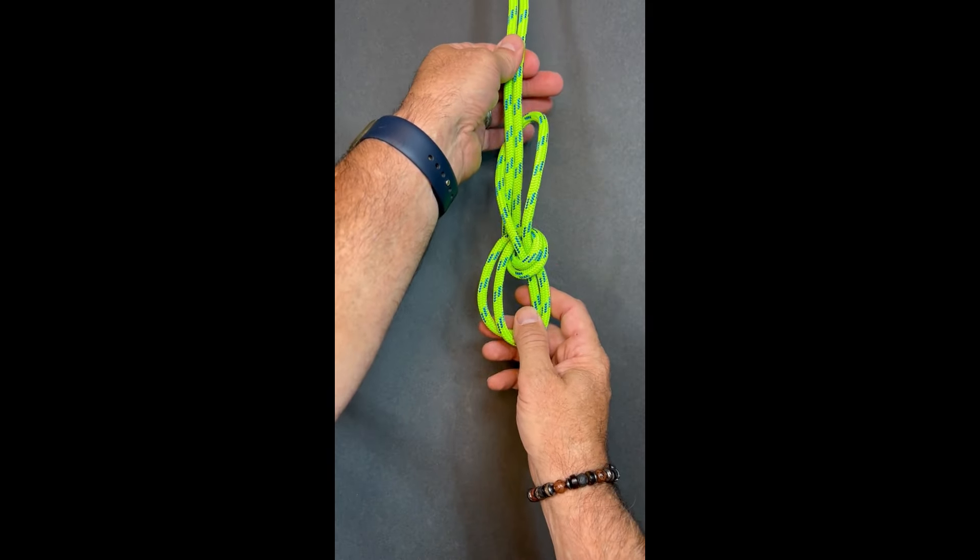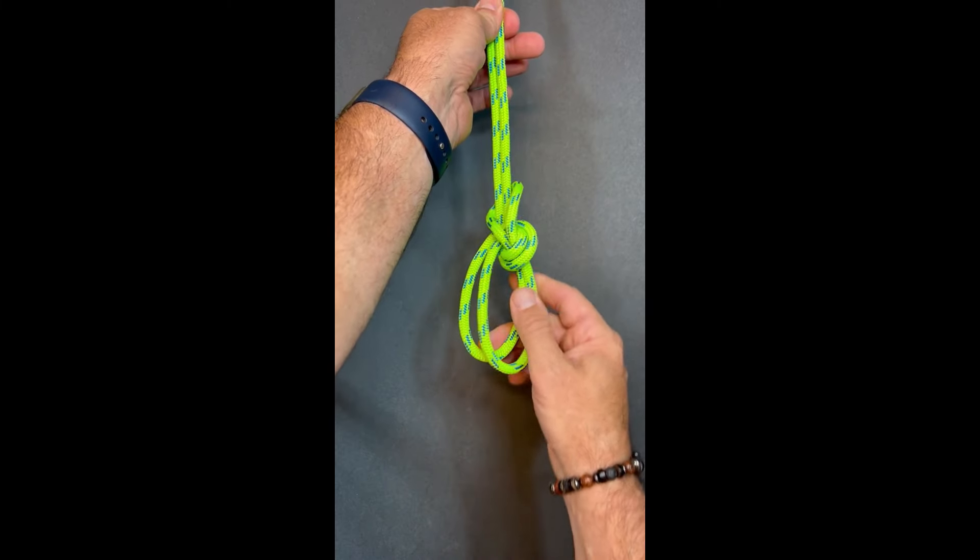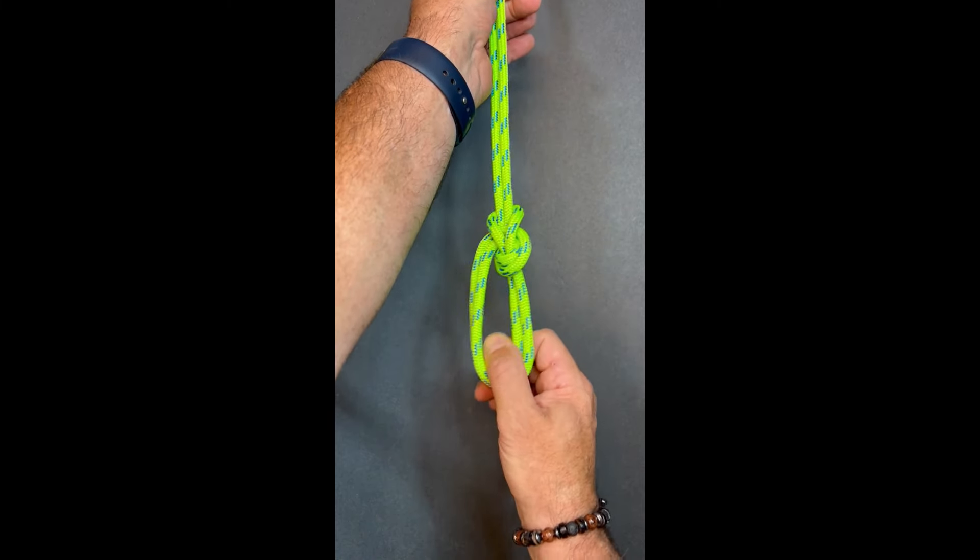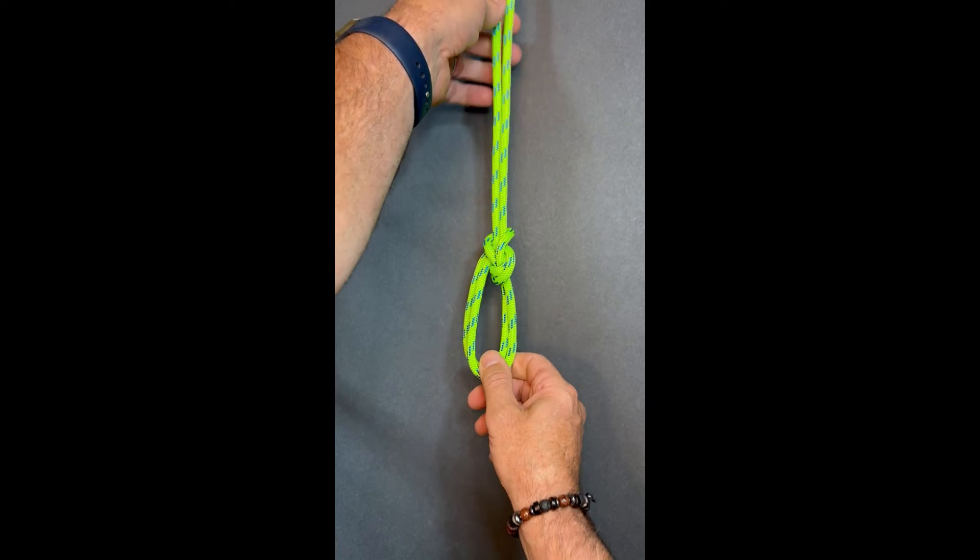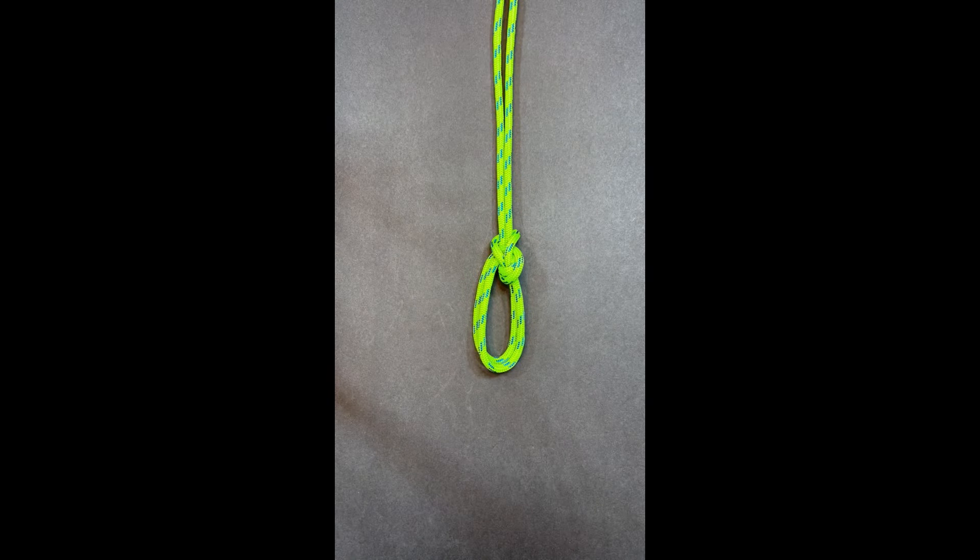Grab our two legs of rope in the loop and pull it away from each other. That cinches it down and that's a bowline on a bite.